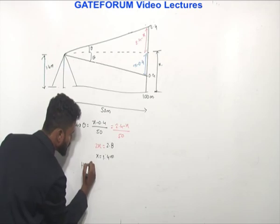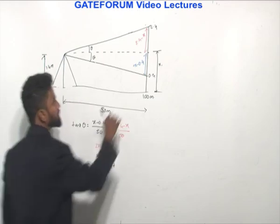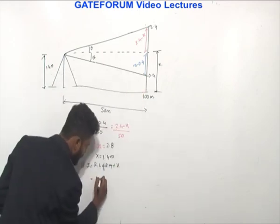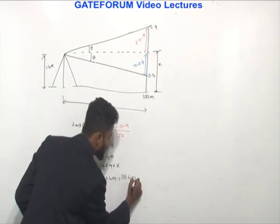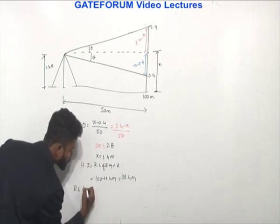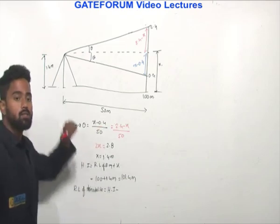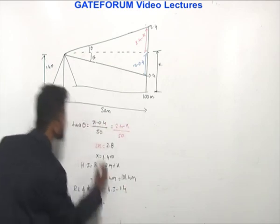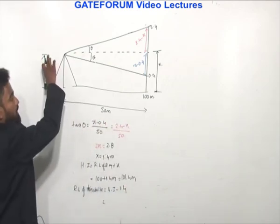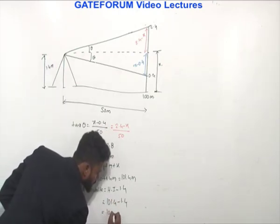From this, the height of instrument equals the RL of the benchmark plus x, which is 100 + 1.4 = 101.4 meters. The RL of the theodolite station equals height of instrument minus 1.4 meters — because the height of the instrument above the station is 1.4 meters — giving 101.4 − 1.4 = 100 meters.